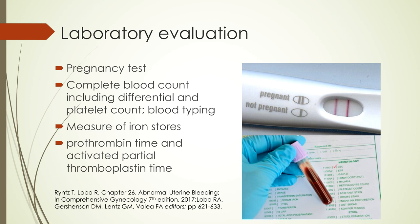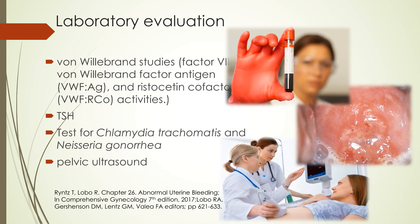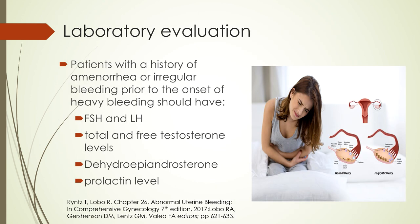For laboratory evaluation, the most important first step is a pregnancy test to rule out pregnancy, especially among patients of reproductive age. Next, do a complete blood count including differential and platelet count, and blood typing. Measure iron stores and determine prothrombin time and activated partial thromboplastin time. We can also request von Willebrand studies, especially for adolescents, TSH, testing for chlamydia trachomatis and neisseria gonorrhea, and a pelvic ultrasound. For patients with a history of amenorrhea or irregular bleeding, we can request FSH, LH, total and free testosterone levels, dehydroepiandrosterone, and prolactin levels.